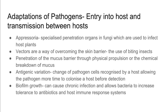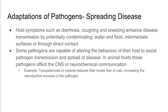Biofilm growth can cause chronic infection as it allows bacteria to increase their tolerance to antibiotics and the host immune response. There are also adaptations helpful for the spreading of disease. Causing host symptoms such as diarrhea, coughing, and sneezing enhances disease transmission by potentially contaminating water, food, and intermediate surfaces or through direct contact. Some pathogens are capable of altering the behavior of their host to allow pathogen transmission and spread. In animal hosts, these pathogens affect the CNS or neurochemical communication — for example, toxoplasmosis in rodents reduces their innate fear of cats, which increases the reproductive success of the pathogen.